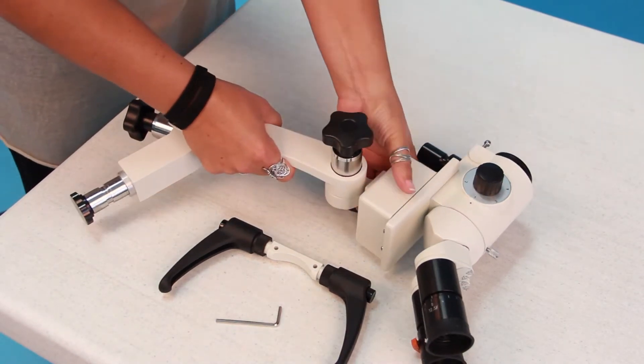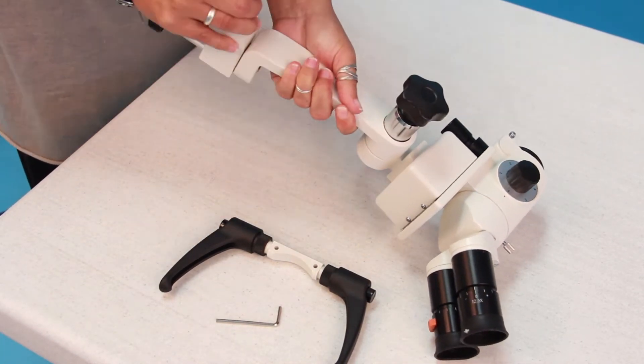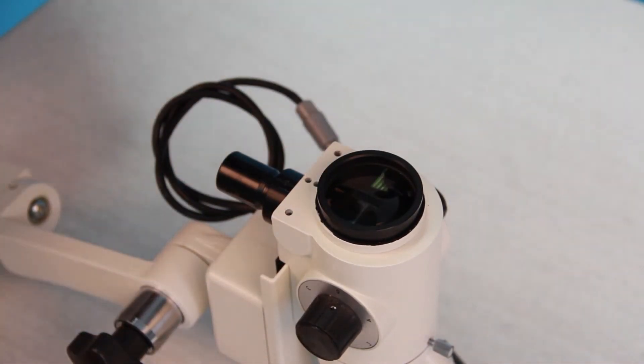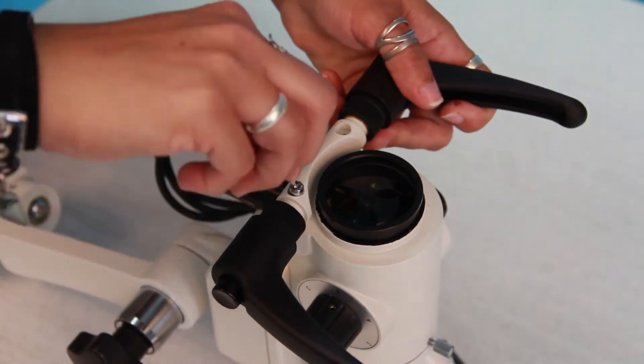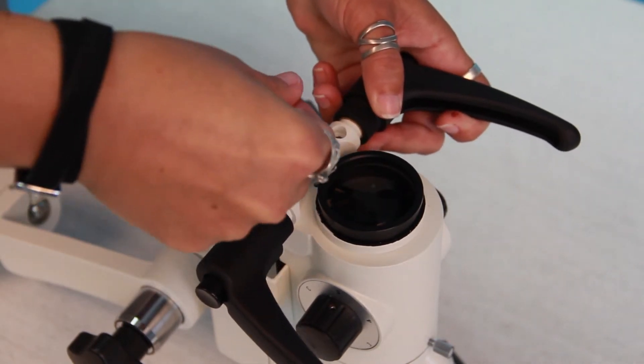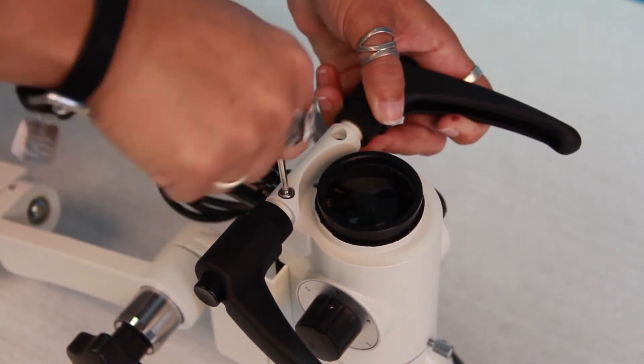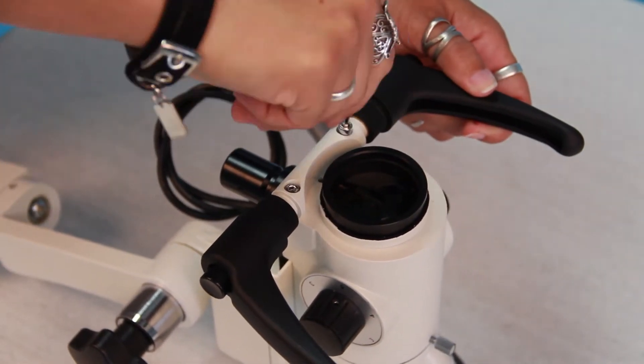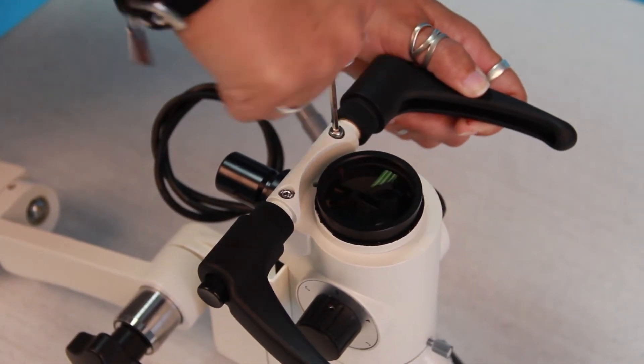Next, we'll attach the handles. Position the microscope head for convenient access to the screws that hold the handles. Eyepieces are held in place mostly by gravity. Never invert the head when the eyepieces can fall out. Remove the two screws with the hex head wrench. Line up the holes in the handle with the screw holes, then reinsert the screw. Fasten securely with the hex head wrench provided.